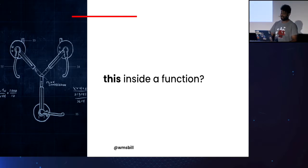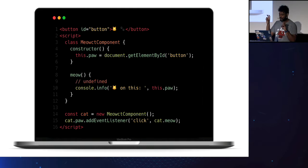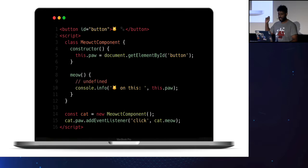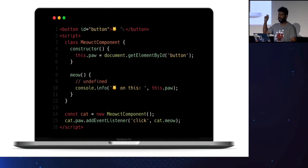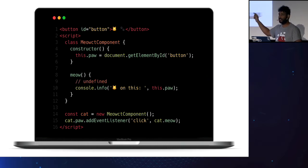What's the value of `this` inside a function? Well, it depends — it depends on how the function is called. I'll show you with a quick example. I create this `meow` component which has one property called `poll` pointing to a button element, and one method called `meow` that console logs the property. On line 15, I add an event listener on the click event to call `cat.meow`. The problem is that when a method is bound in an event handler, `this` inside it will be the target element, not the instance of the class. So `this` is the button, and the button doesn't have `poll` — that's why we get `undefined`.